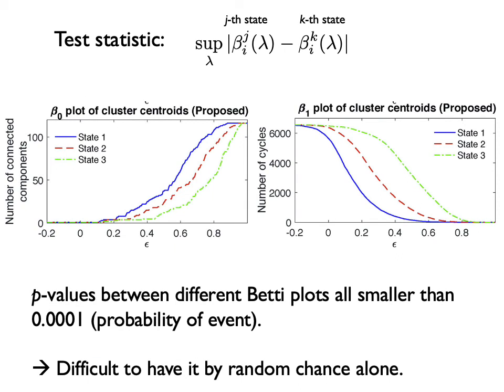Based on the proposed method, we plotted the β₀ and β₁ plots for States 1, 2, and 3. Based on the exact topology inference procedure, we computed p-values between all pairs of plots, and they all show p-values smaller than 0.001, indicating this event cannot happen by random chance alone. They are very strong biological signals, and we conclude that the brain network changes between three states are topologically different.